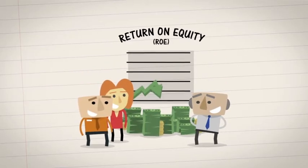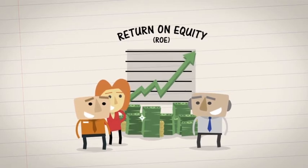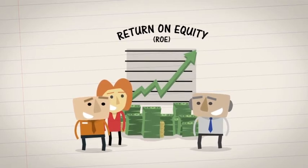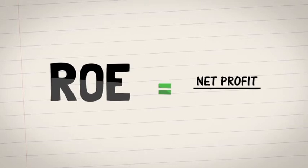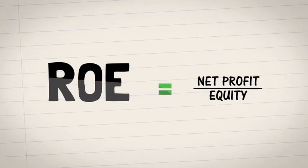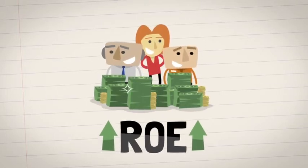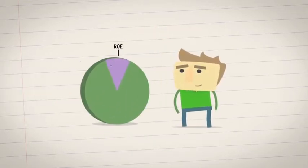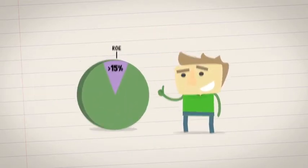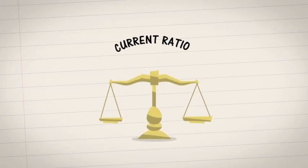The third ratio is return on equity, or ROE. This measures how much profit a company makes from shareholder equity. To calculate ROE, take the net profit and divide it by equity. The higher the number, the more money the company makes for its shareholders. Look for an ROE of 15% or higher.